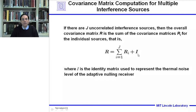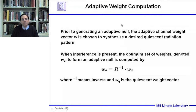This slide shows how to calculate the covariance matrix when there are multiple interference sources. If there are J uncorrelated interference sources, then the overall covariance matrix R is the summation of the covariance matrices for the individual sources, and we add in the identity matrix to represent thermal noise of the adaptive nulling receiver. Prior to generating an adaptive null, the adaptive channel weight vector W is chosen to synthesize a desired quiescent radiation pattern.